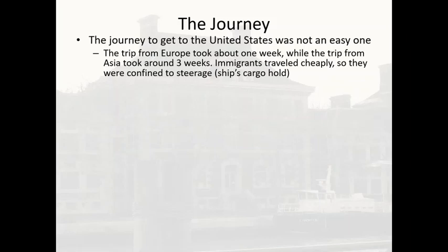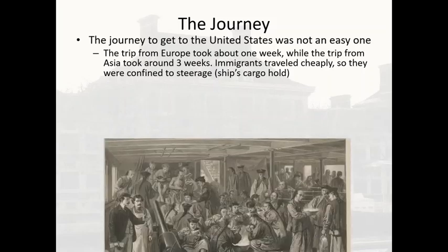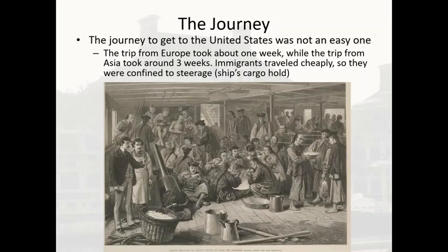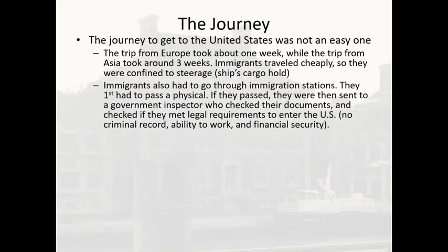The journey to get to the United States was not an easy one. The trip from Europe took about one week, while the trip from Asia took around three weeks. Immigrants traveled cheaply, so they were confined to steerage — the ship's cargo hold. Conditions were not very nice: cramped, not a lot of space, and diseases could spread very quickly. Immigrants also had to go through immigration stations — they first had to pass a physical, and if they passed, they were sent to a government inspector who checked their documents and verified they met legal requirements: no criminal record, ability to work, and some financial security.